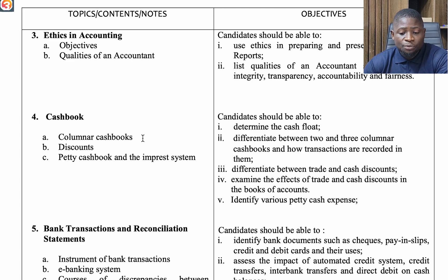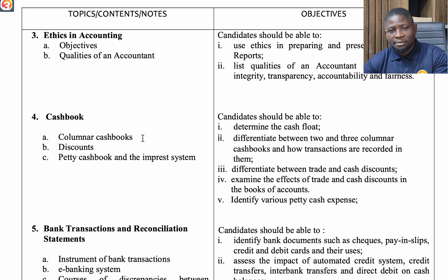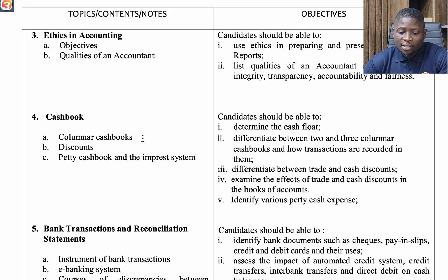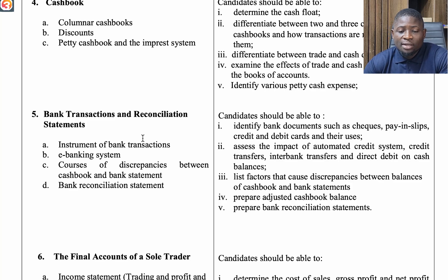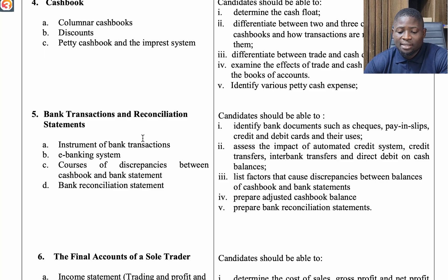The fourth topic is Cashbook. Look at columnar cashbooks, discounts, petty cashbook, and the imprest system. The fifth topic is Bank Transactions and Reconciliation Statements. Under this, look at instrumental bank transactions, e-banking systems, causes of discrepancies between cashbook and bank statements, and bank reconciliation statements.